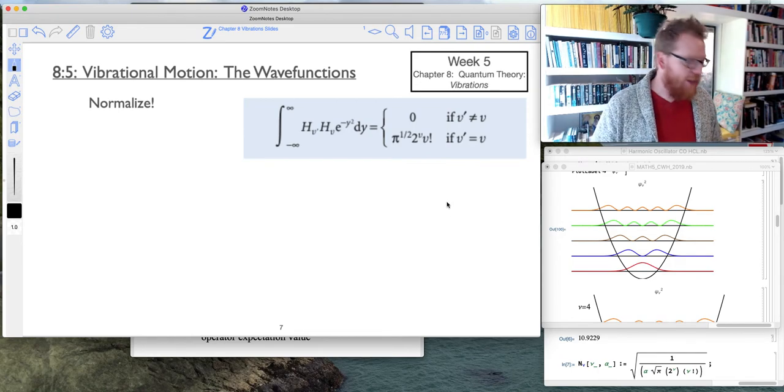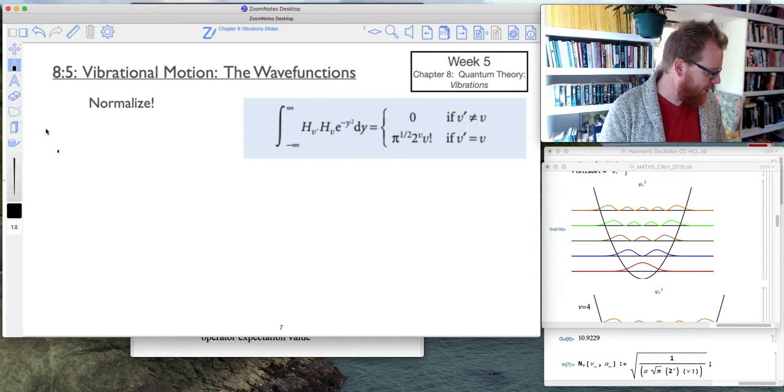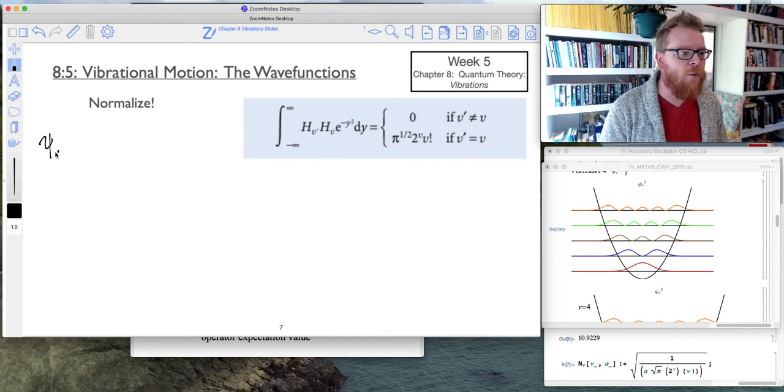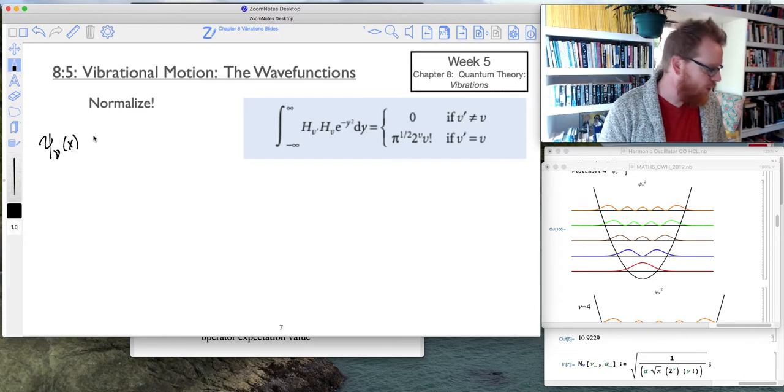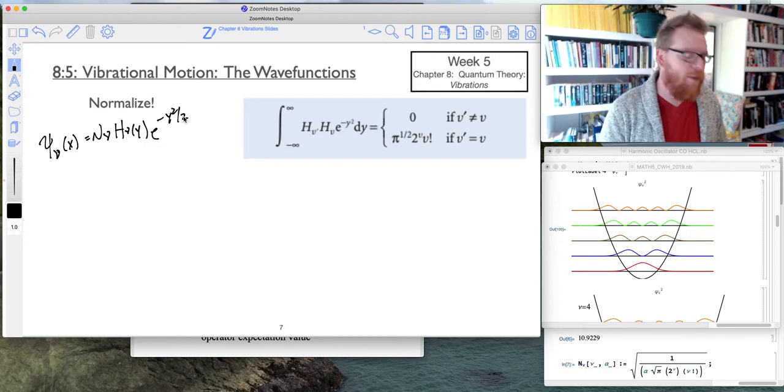So let's do that. We're going to take advantage of this property of the Hermite polynomials. And so I'm going to write this just as it was written in the book where I'm writing sine nu of x equals n sub nu times h nu of y e to the negative y squared divided by 2.